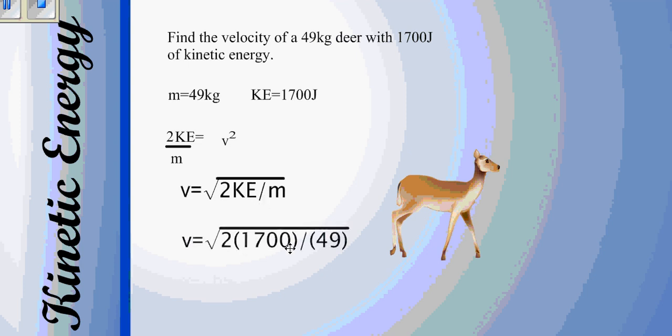We plug in our values, and we end up with a velocity of 8.3 meters per second. That's a pretty standard velocity. I'd believe that for a deer running through the woods.